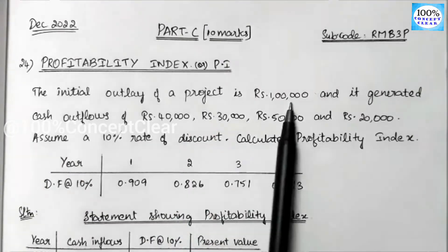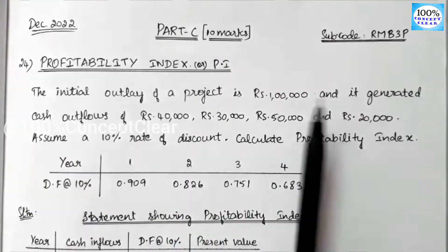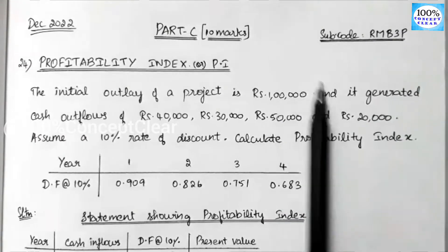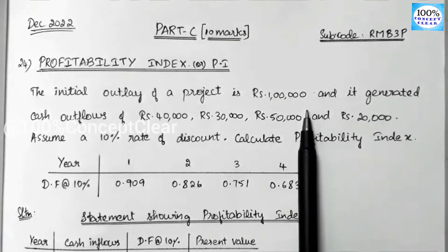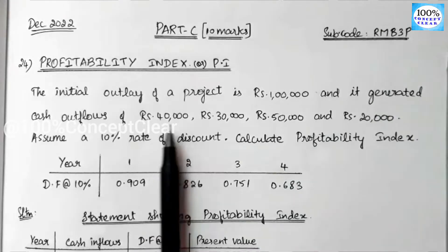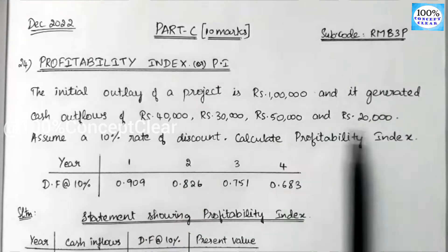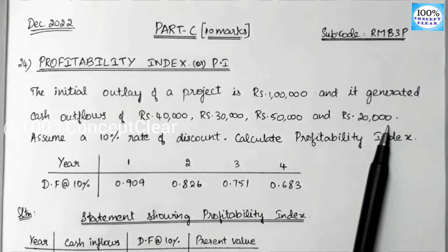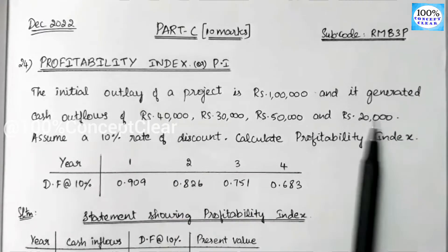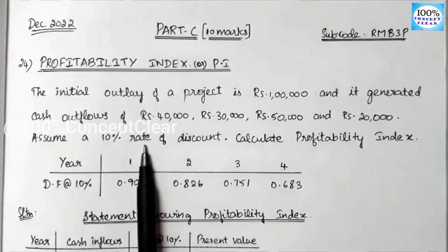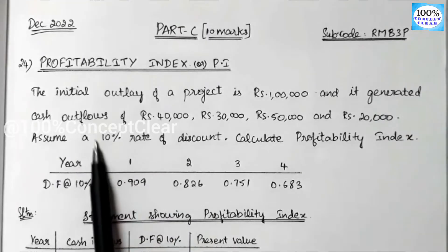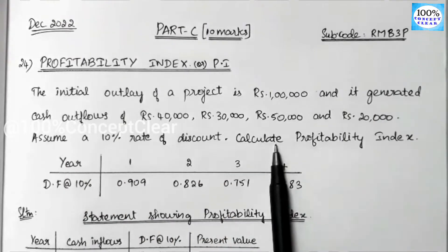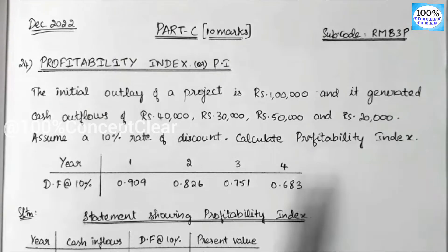First, the initial investment amount is 1 lakh. Next, this project will generate cash inflows of 40,000, 30,000, 50,000 and 20,000 — that means we have values over 4 years. We assume the rate of discount is 10%.